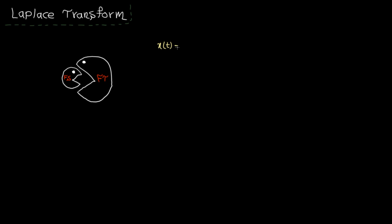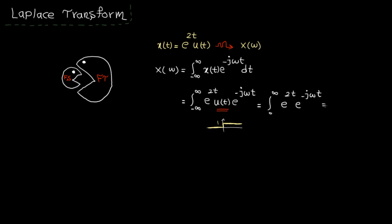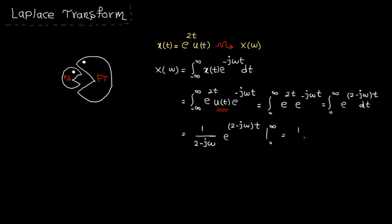Let's look at this example. This exponential function is given and we want to find its Fourier transform. To do so, we simply need to solve this integral. Let's replace x(t) by the given function. u(t) is 0 for t less than 0, so the integral is non-zero from 0 to infinity, and in this interval u(t) is 1. Let's combine the exponential functions into one term.